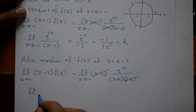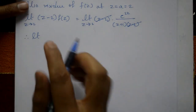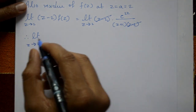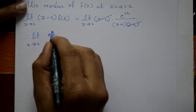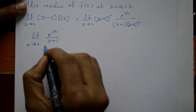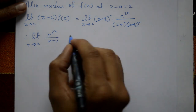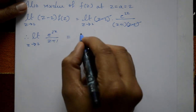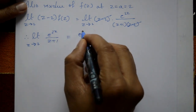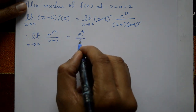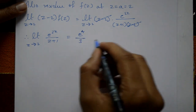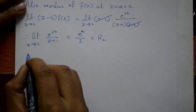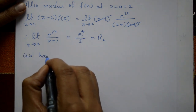Substituting z = 2, we get e^(2·2) / (2 + 1) = e⁴ / 3. This is the second residue, R₂.